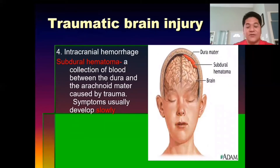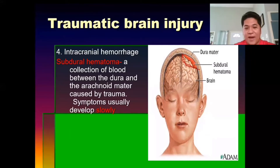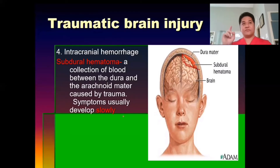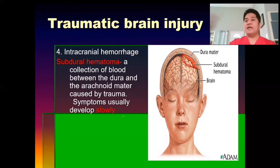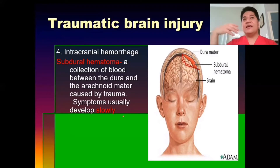Now, intracranial hemorrhages include subdural hematomas. There is an aneurysm or blood clot that forms. These are collections of blood between the dura and the arachnoid matter caused by trauma, and symptoms develop slowly. Some clients are hit by a car and don't notice they have a head injury — they stand up and go home — then after three, four, or five hours they develop symptoms, become comatose, and could potentially die.